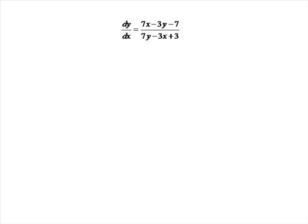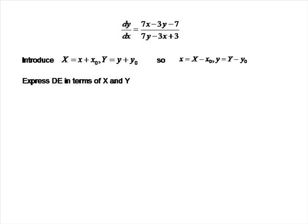This differential equation is not homogeneous, but it can be reduced to homogeneous form. To do that, we introduce a capital X and a capital Y, such that capital X is x plus x₀ and capital Y is y plus y₀, where x₀ and y₀ are values we're going to work out later. This means little x is capital X minus x₀, and little y is capital Y minus y₀. Our goal is to construct a differential equation in terms of these new variables, capital X and capital Y, instead of the little x and little y.